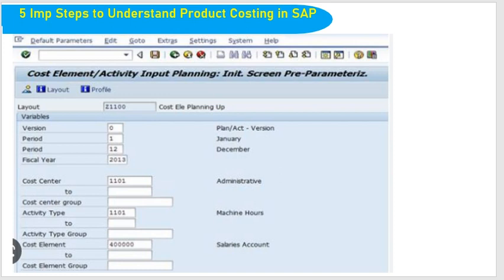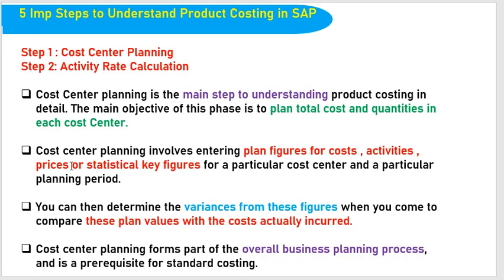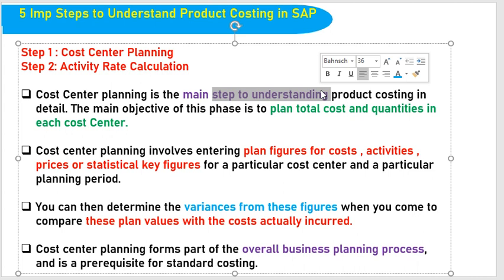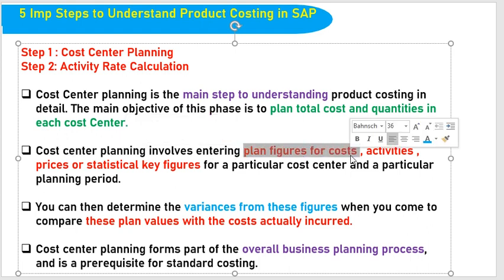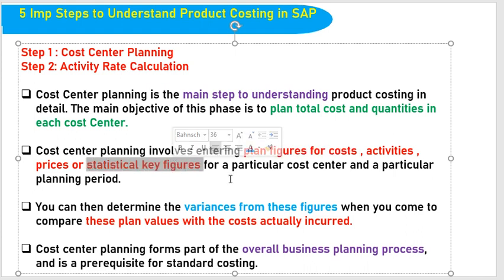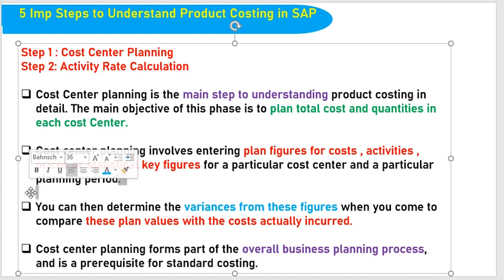Generally, the T-code used is KP06. Cost center planning is critical to understanding product costing. The planning is very important to know more about product costing. The objective of this phase is to estimate the total cost and quantities in the cost center. Cost center planning involves entering plan figures — cost activity prices and statistical key figures — for a particular cost center and for a particular planning period.